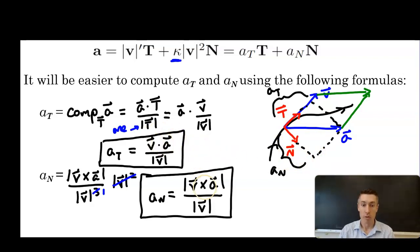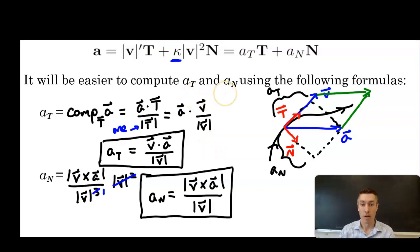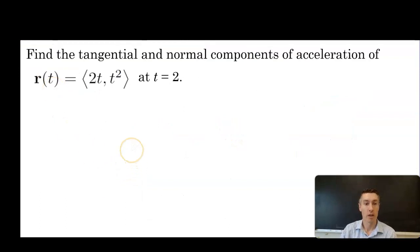Both of these computations we have done before in different areas, and now we're bringing them together to compute the tangential and normal components of acceleration. That was a lot of derivation — now let's apply them to two examples. Find the tangential and normal components of acceleration of r of t equaling ⟨2t, t squared⟩ at t = 2.